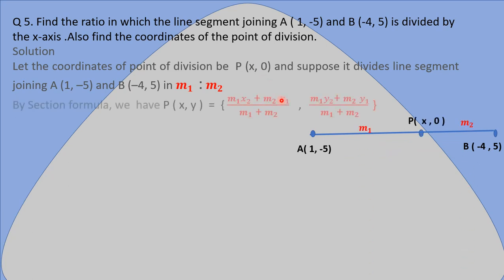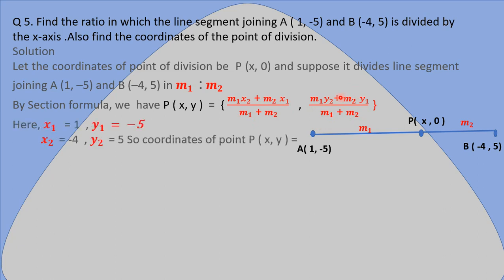We can use the section formula for the coordinates of point P(x, y): x = (M1·x2 + M2·x1) / (M1 + M2) and y = (M1·y2 + M2·y1) / (M1 + M2). The first is for the x-coordinate and the second is for the y-coordinate.